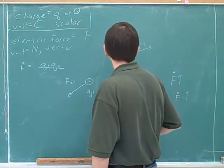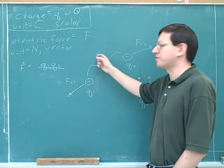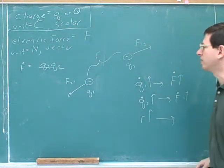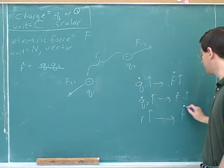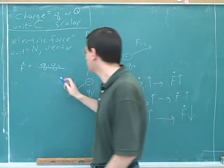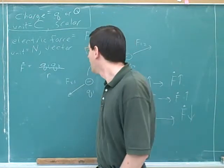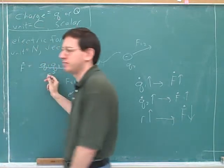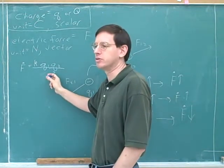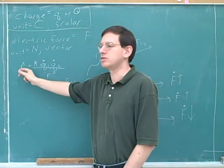Now we introduce R, the distance between the two charges — R here stands for distance, not radius. If the two charges get further apart, common sense says that should decrease the magnitude of the force, so R goes in the denominator. We're building up Coulomb's law, and a lot of it is common sense. One thing you might not figure out from common sense is that R must be squared. We also need a constant of proportionality. This is Coulomb's law, which gives you the magnitude of the electric force.